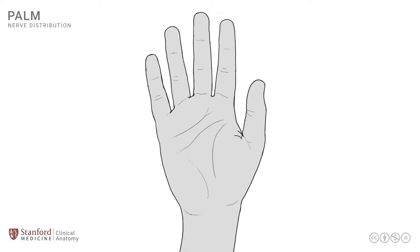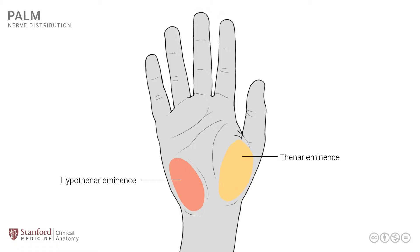There are two elements of the hand in the more proximal part, known as the thenar and hypothenar eminences. The thenar eminence is the area at the base of the thumb, whereas the hypothenar eminence is the area at the base of the little finger. These are quite prominent because of certain muscles that are in these locations.